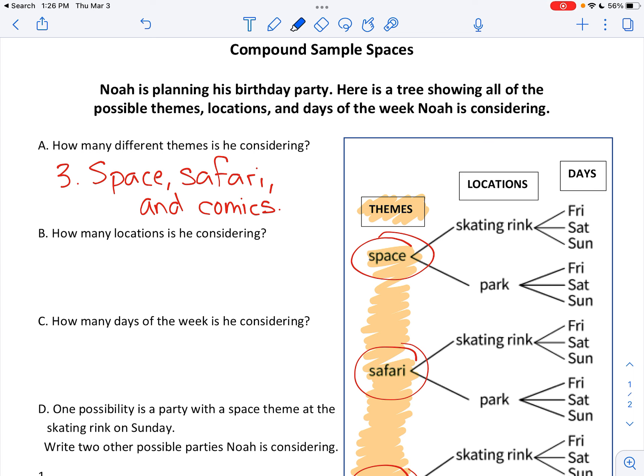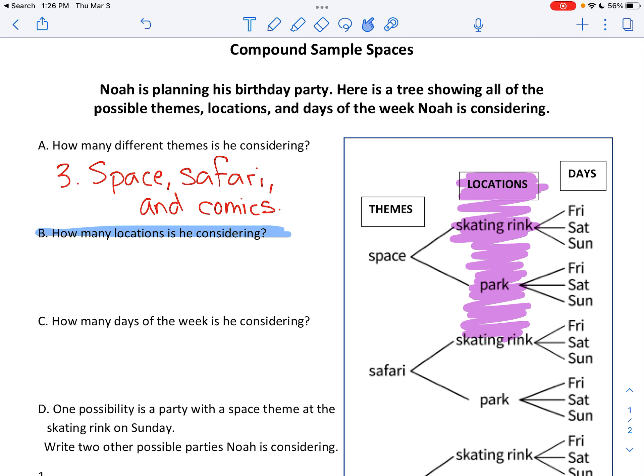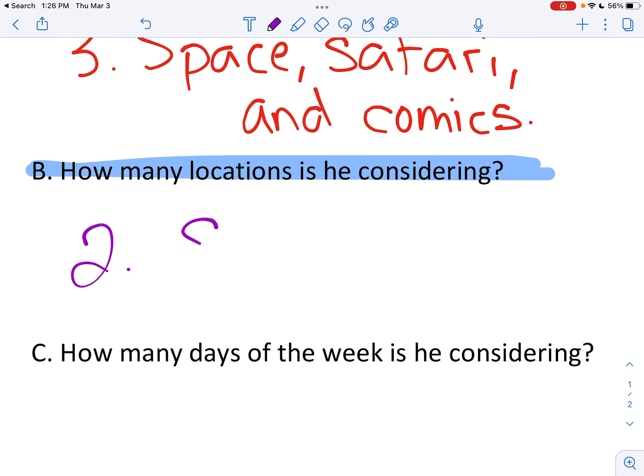All right. The next question. How many locations is he considering? So I'm going to get rid of what I've colored here. And now I'm going to go to locations. So that's in the middle. Locations going down: skating rink, going down park, and going down, oh, skating rink again. So I don't have to include that. There's only two unique answers. There are two locations: the skating rink and the park.